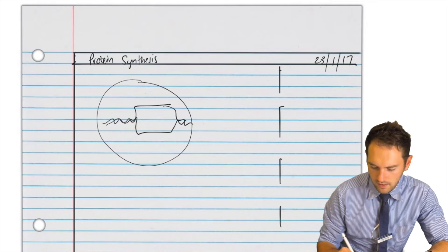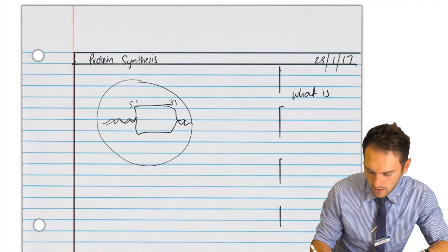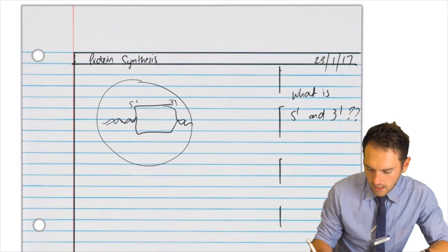Now over here we might go, I don't quite understand the, say, 5' to 3' directional stuff to do with DNA. So I'm going to put that question here. What is 5' and 3'?